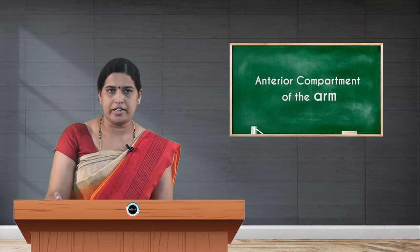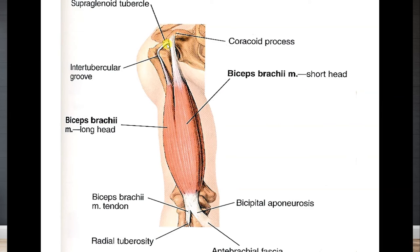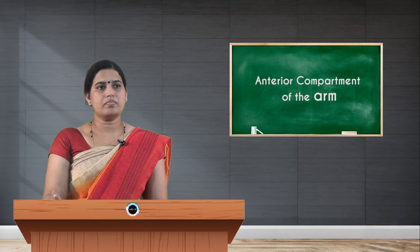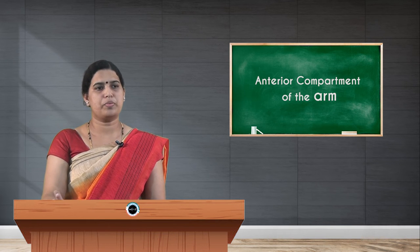You can see the muscle here — the long head arises from the supraglenoid tubercle above the glenoid cavity, where the tendon is intra-capsular. It passes between the two tubercles of the humerus — the lesser tubercle and greater tubercle — then forms the muscle belly. The short head takes its origin from the coracoid process. The two heads pass together and insert into the radial tuberosity, with the bicipital aponeurosis going to the posterior border of the ulna.